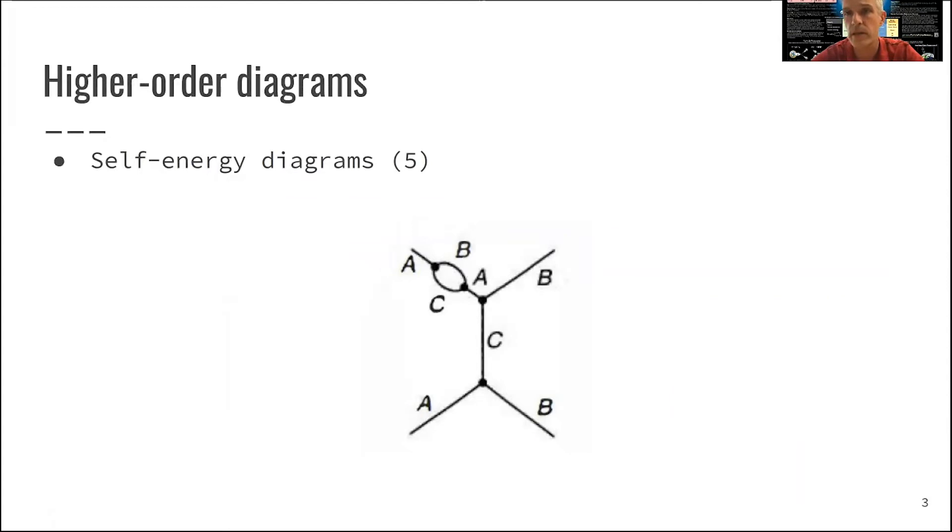And this example is one where one of the legs involved, or one of the particles involved, has a correction to its own mass and energy. This is the so-called self-energy diagrams. And if you do the counting correctly, you find that there's five of those diagrams.